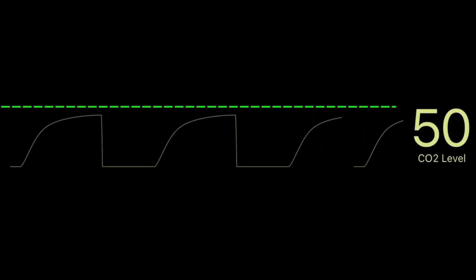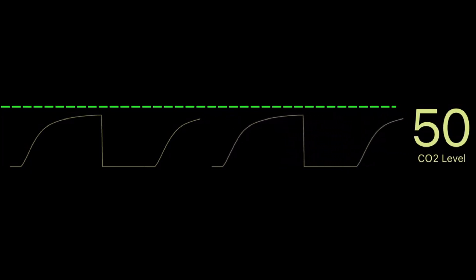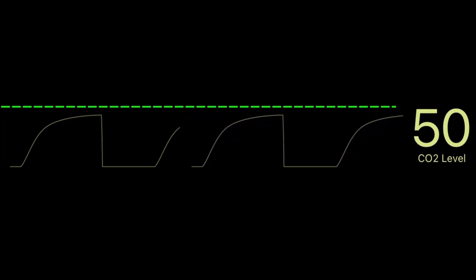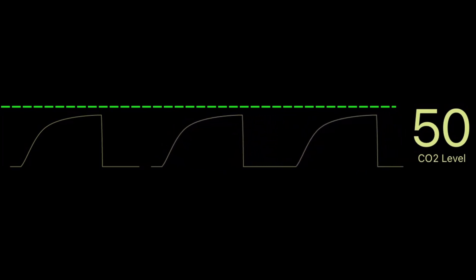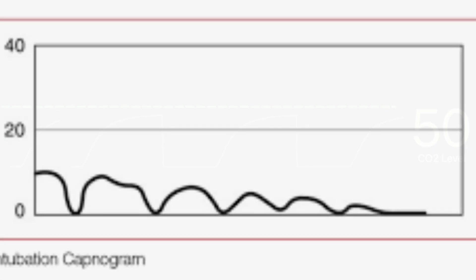Patients who are hypoventilating are going to have waveforms that are elongated and possibly further apart, with a higher CO2 reading because the patient is retaining CO2. In patients with bronchoconstriction, you're going to see the classic shark fin waveform, due to that prolonged expiratory phase when the patient is wheezing or having trouble getting air out. You'll also notice an increase in the patient's CO2 reading.